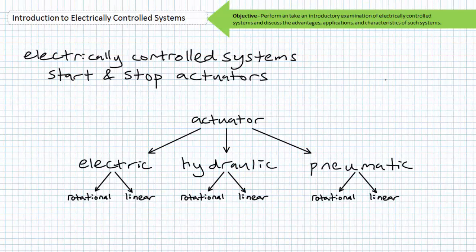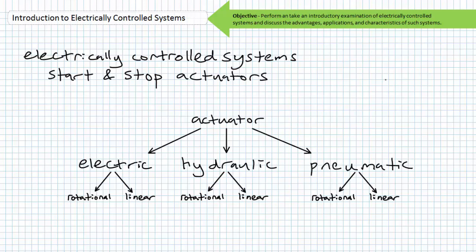An actuator is a device that takes one form of energy and converts it into mechanical movement. Actuators can be differentiated by the form of input energy and the form of mechanical movement they produce. Input could be electrical, hydraulic, pneumatic, thermal, chemical, etc. The mechanical output could be linear, rotational, or oscillation, which is a form of partial rotation.